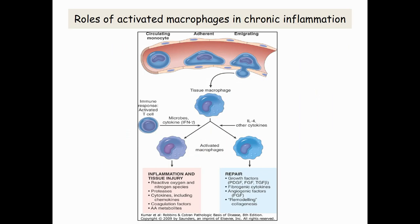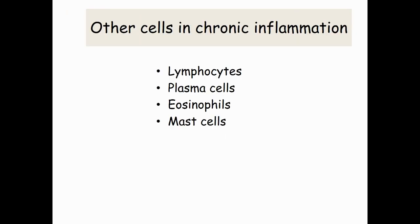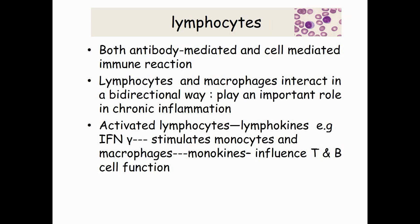This diagram shows the roles of activated macrophages in chronic inflammation. Other cells involved in chronic inflammation are lymphocytes, plasma cells, eosinophils, and mast cells.